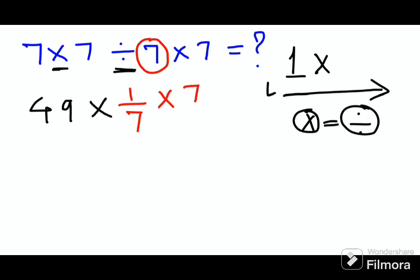And this multiplied by 7 will remain as it is. So now what happens is if you look closely, 7 and 7 are getting cancelled. So your final answer for this particular question is nothing but just 49.